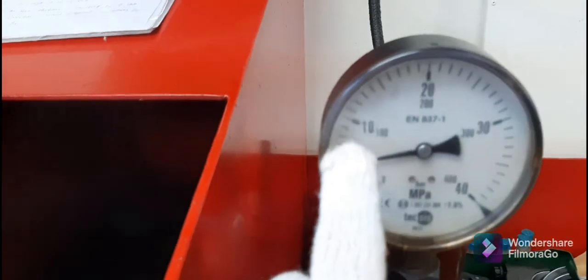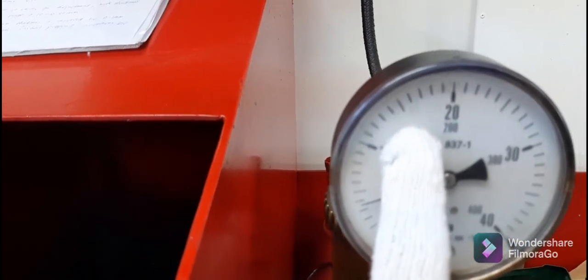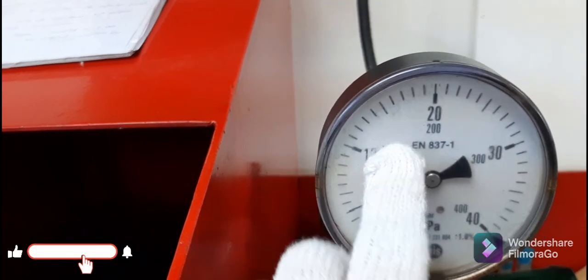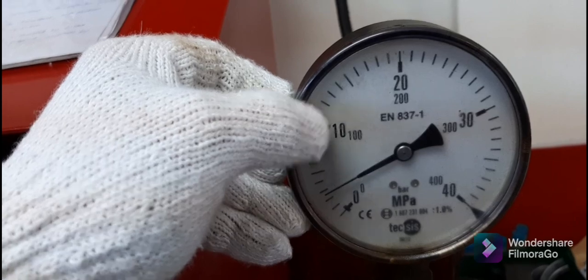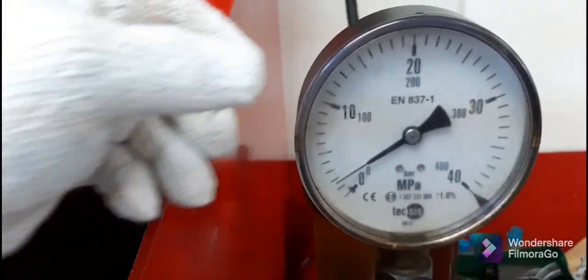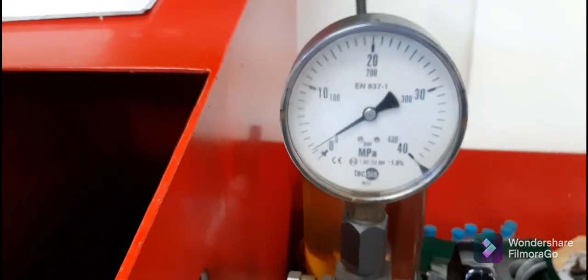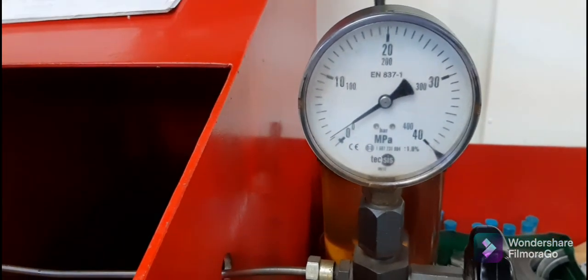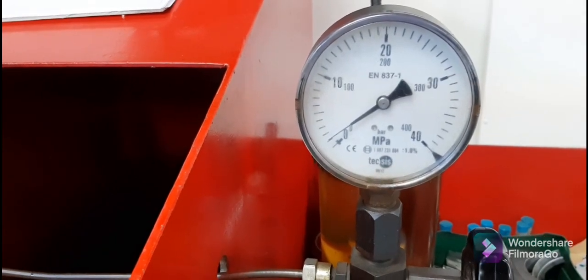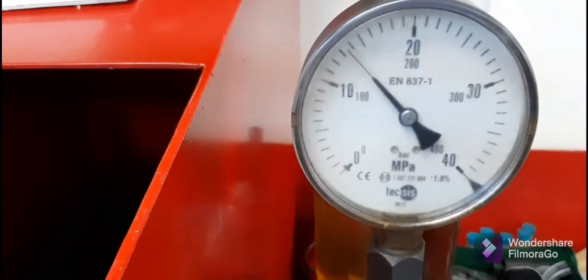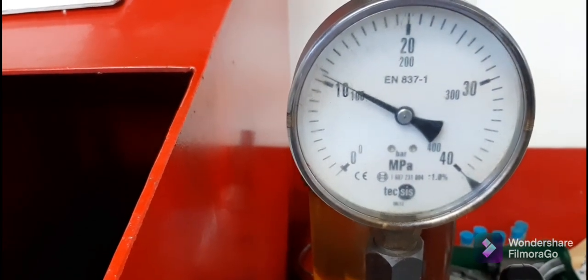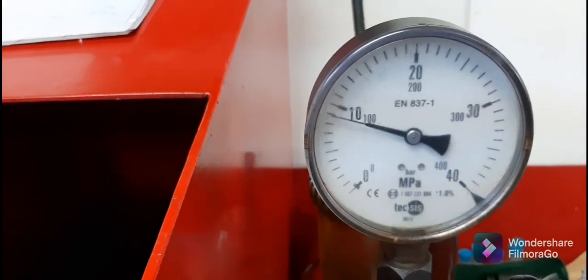So the standard value is 15,190 kilopascal to 16,180 kilopascal. So it must be here. This is 15, so 10, 15, and this is 20. Must be the value of our injector nozzle. So we will try to check, monitor the pressure if we can reach the standard value. So less than 14,000 kilopascal. So under the pressure. So we have to remove and dismantle our injector.